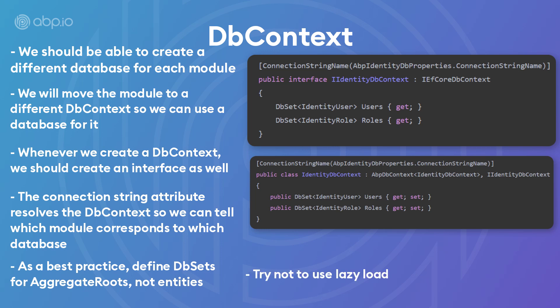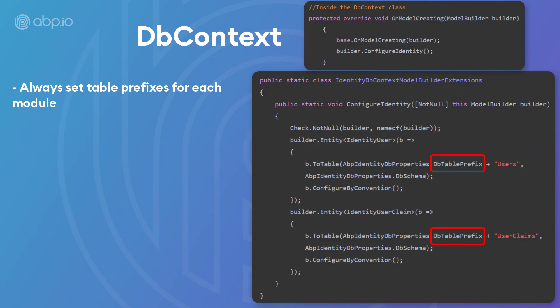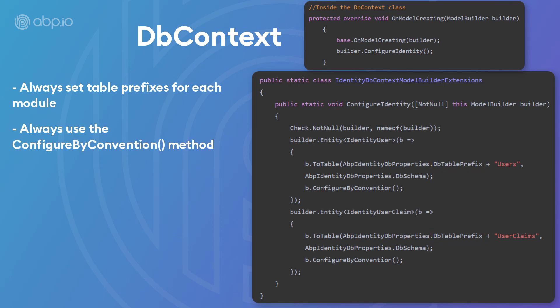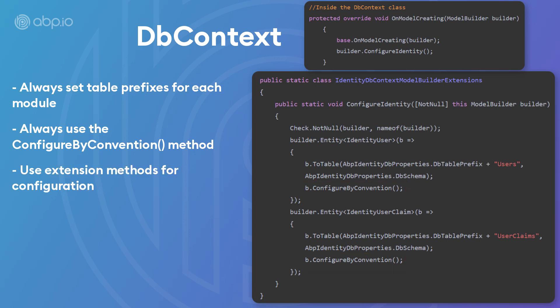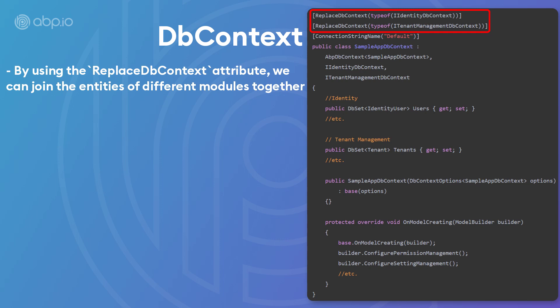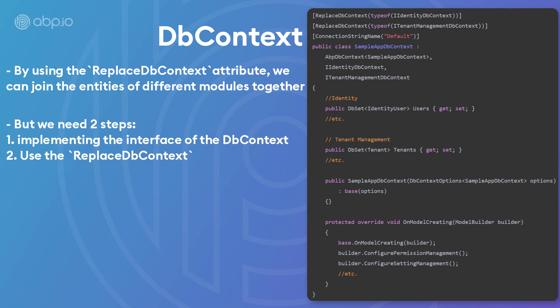As a best practice, try not to use lazy loading because if other ORMs don't support it, it's going to fail. Always set table prefixes for each module so that tables don't get mixed up with each other. When you're configuring your tables or entities, always use the configure by convention method — it auto-configures for the base class properties. Also use extension methods for configuration; putting all the fluent API configuration in extension methods is a best practice. By using the replace DbContext attribute, we can join the entities of different modules together.